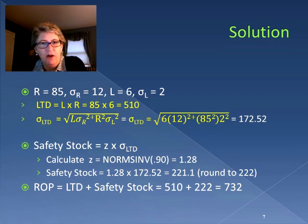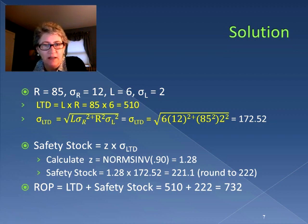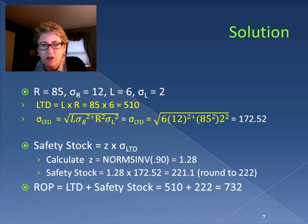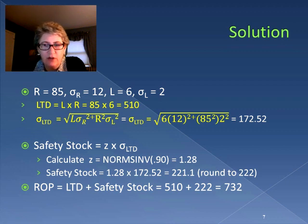Using the given variables, we calculate the lead time demand to be 510, and the standard deviation of that lead time demand is 172.52. Going back to the standard safety stock equation — z times the standard deviation of lead time demand — we calculate our z-statistic, compute safety stock, and always round up: safety stock is 222. Our reorder point is lead time demand plus safety stock: 510 + 222 = 732. So when inventory drops to 732 boxes of chocolate, we place our order.